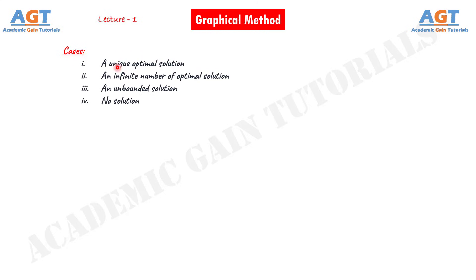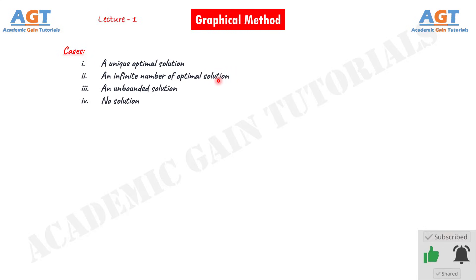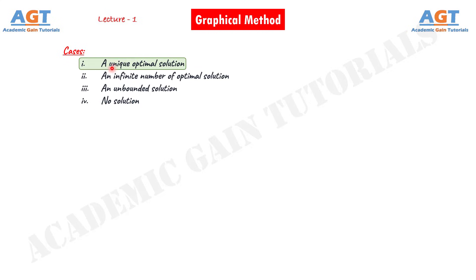Number one, a unique optimal solution. Number two, an infinite number of optimal solutions. Number three, an unbounded solution, and number four, no solution. So in this lecture we will discuss a unique optimal solution. Let's look at an example on this.